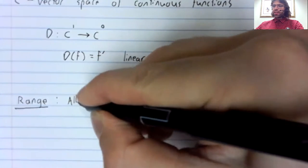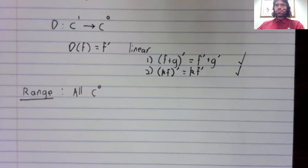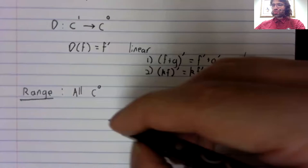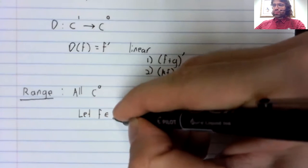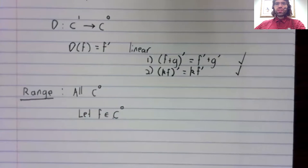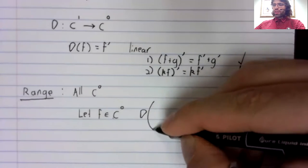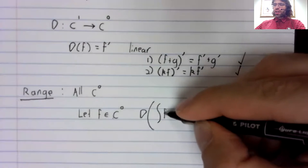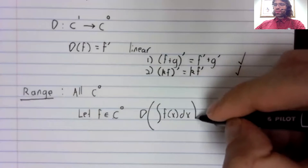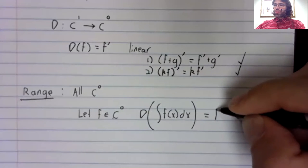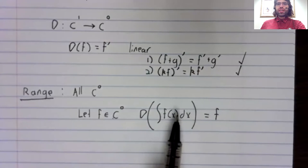The range is all of C0, all the continuous functions. And that's because suppose F is in C0. Then if we take D and apply it to an anti-derivative of F, we get F. So this function has a pre-image.